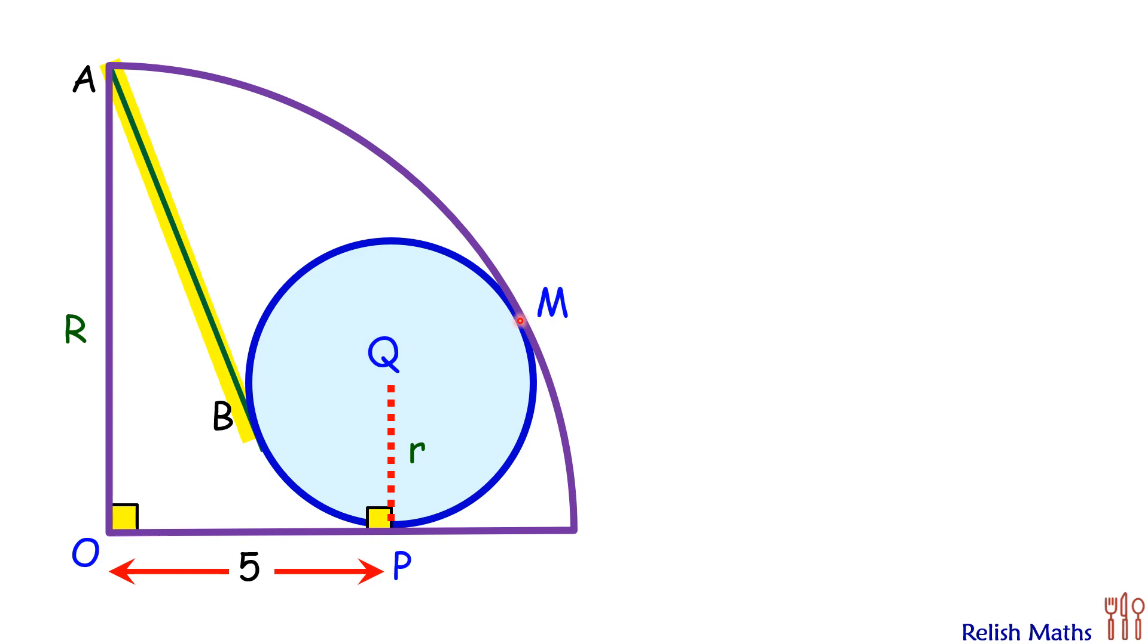We know that if two circles are touching each other, then their centers and the point of contact all three are collinear. They will lie on the same line. QM is nothing but the small radius r. OM is big radius capital R. And thus OQ will be capital R minus small r.